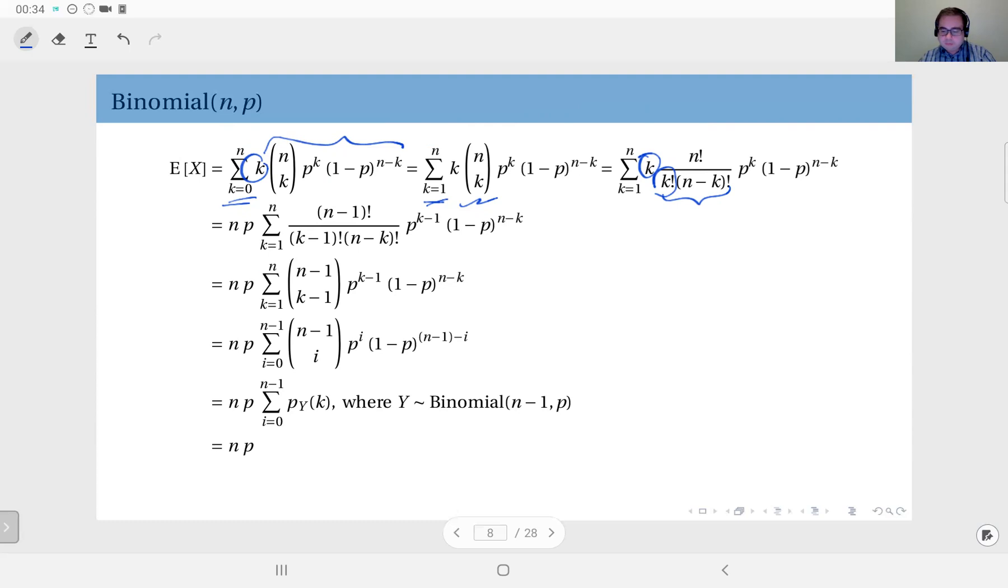Then I'm going to pull out one p from here, so I'm going to write this as p times p^(k-1), and this is n times (n-1)!. So that gives me this, and I can pull out n and this p to the outside of the sum because they do not depend on k.